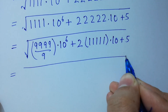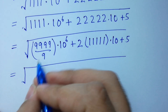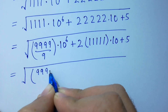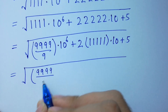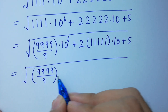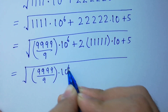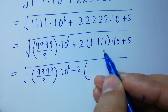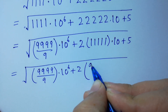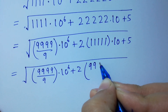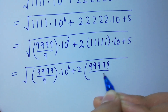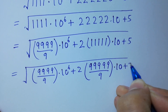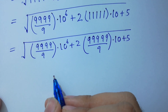Square root of 4 times 9, 1, 2, 3, 4 over 9 times 10 to the power 6, plus 2. And here 5 times 1 is the same as 5 times 9, 1, 2, 3, 4, 5 over 9 times 10, as it is, plus 5. Very simple.